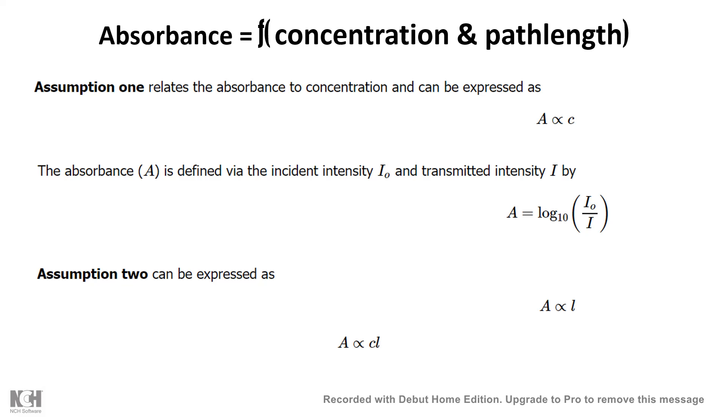So if we combine these two, we come up with absorbance proportional to both path length and concentration, and you can remove this proportionality sign by putting a constant. This constant is known as molar extinction coefficient. We would be talking about it later as well.